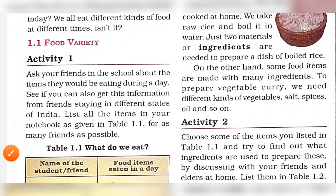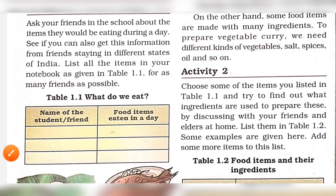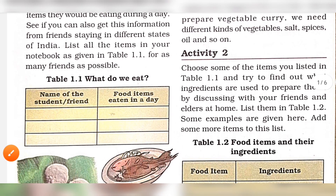You are all friends from different states. You have a great activity — you can list all the items in your notebook as given in Table 1.1. It is not a compulsory activity, but it is good for the table activities.